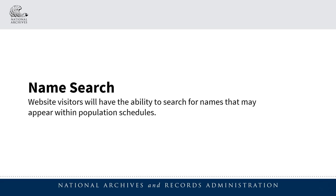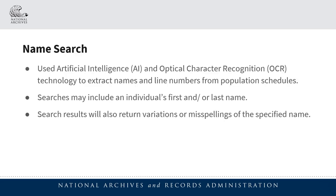The next feature that you can expect to find on the 1950 Census website when it launches on April 1st is name search. Through the name search feature, you will have the ability to search for any known name that may appear within the 1950 Census population schedules, specifically those that appeared within the name column on the population schedule forms. To make this feature possible, our team used an artificial intelligence tool to extract names and their associated line numbers from the 1950 Census population schedules. Searches may include an individual's first and/or last name, and the search engine has been configured to find close variations or spellings of names as they appear within the site's name index. There are some things to be aware of — the names on the population schedules are handwritten.